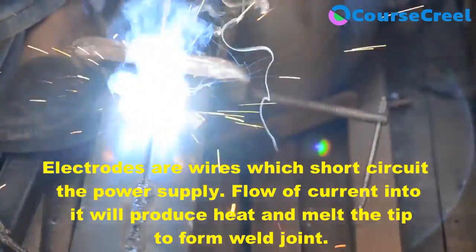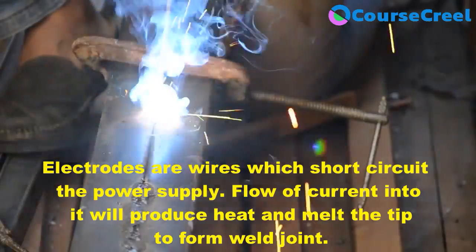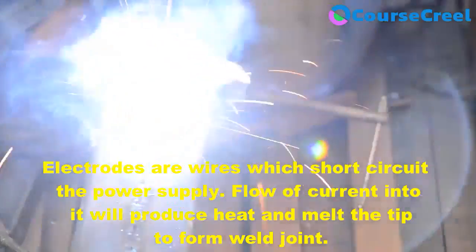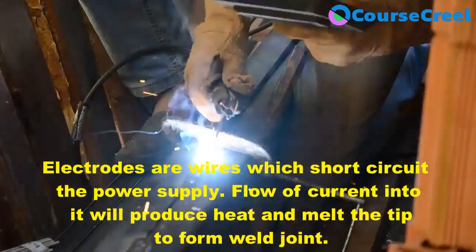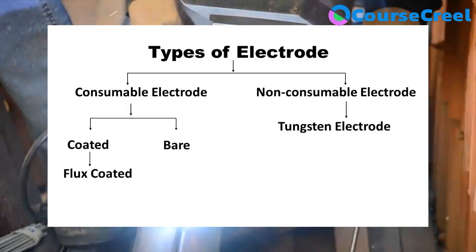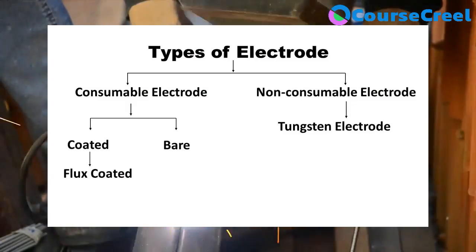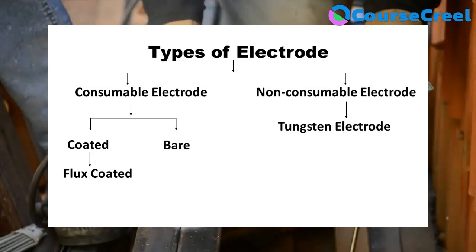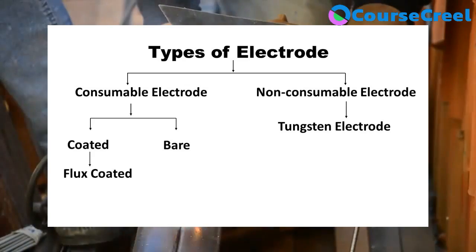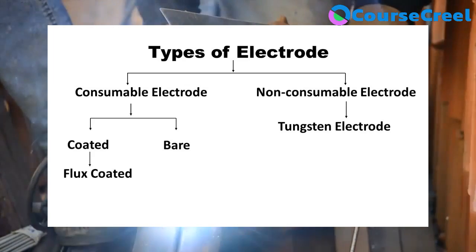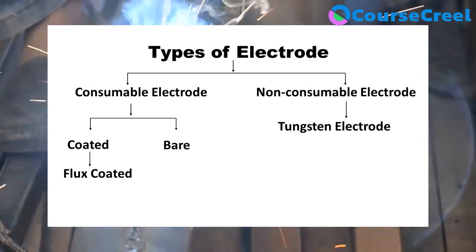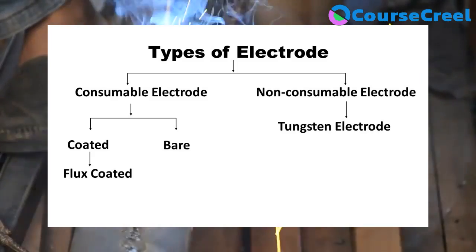This process is mainly performed with the help of heat produced during the process. There are two types of electrodes used in welding: consumable electrode and non-consumable electrode.